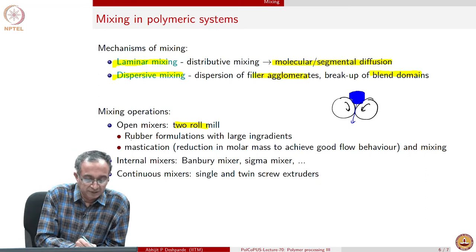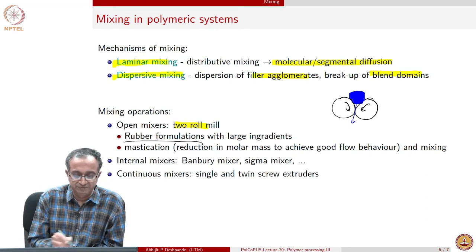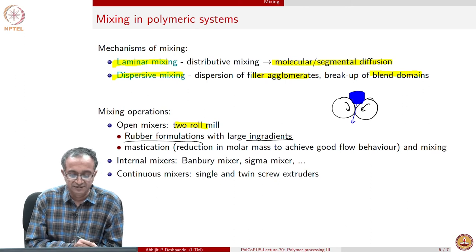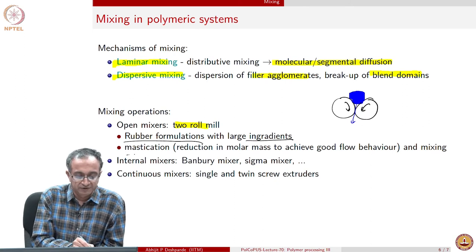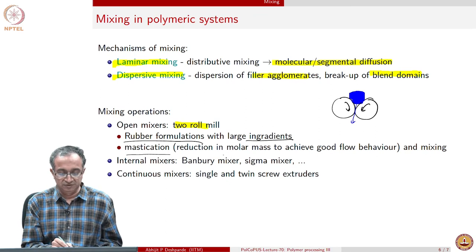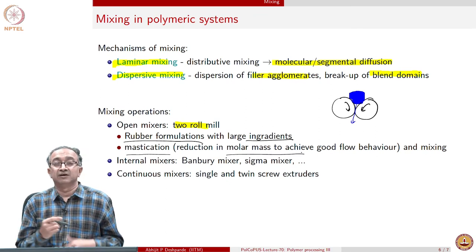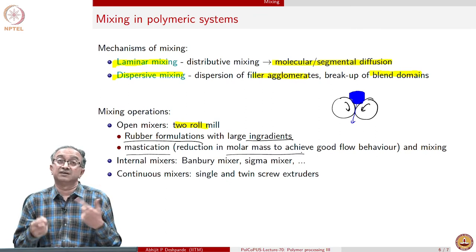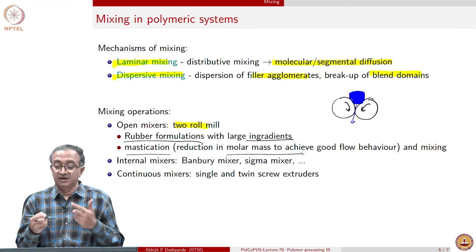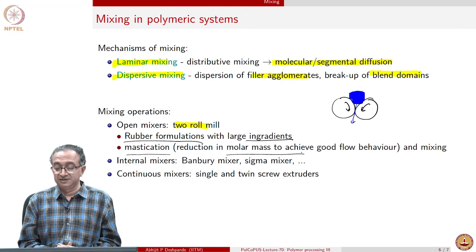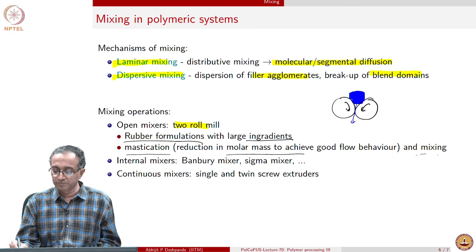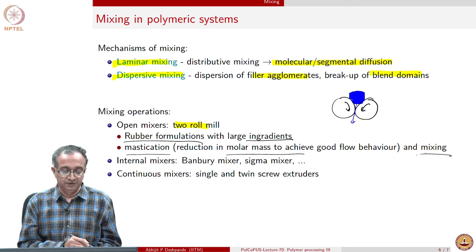Rubber formulations, for example, are processed this way because there are large number of ingredients which have to be mixed. We can also use this to achieve a good molar mass because chain scission and other processes can happen because of high rates of shear which are generated in such processes. We have both mixing as well as mastication.